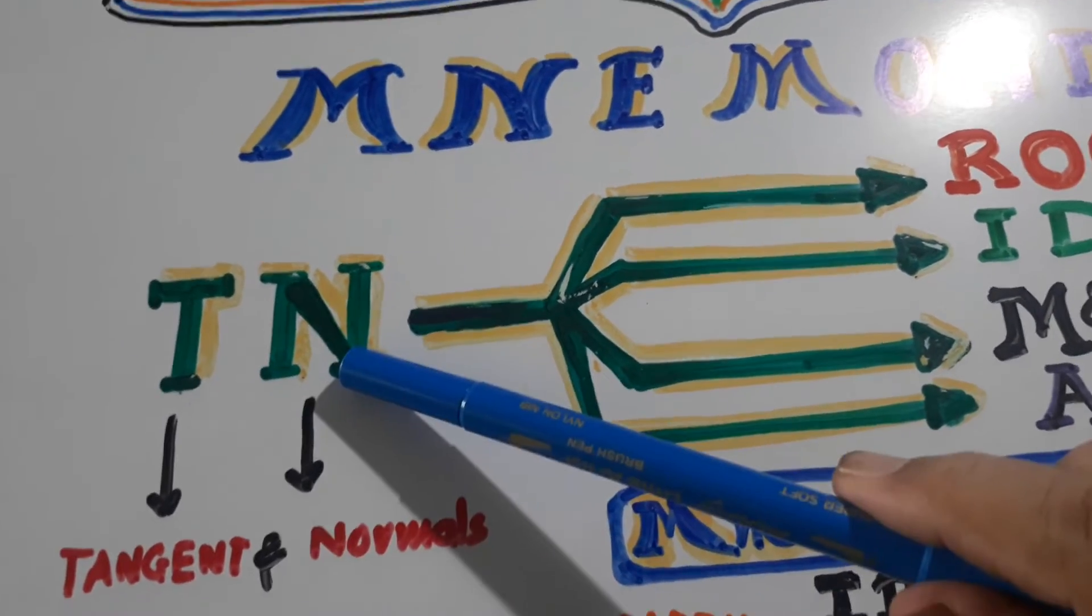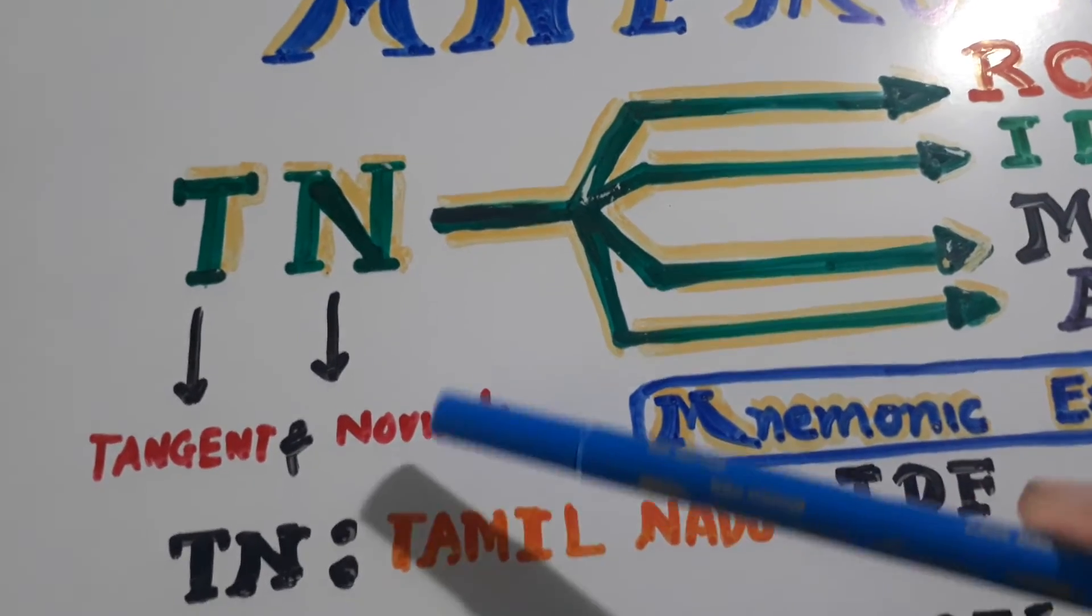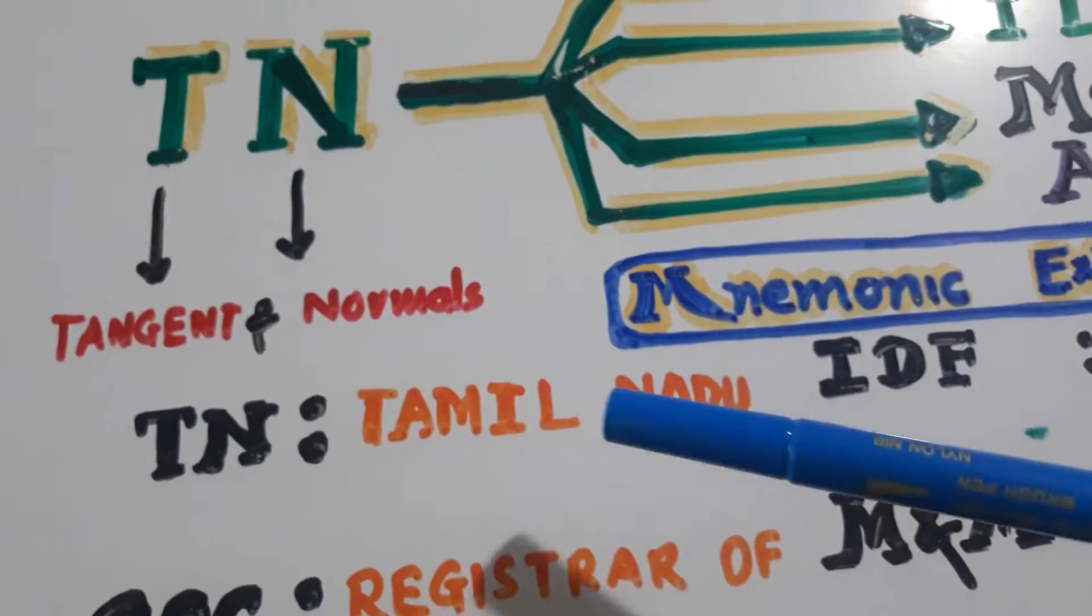T.N. - Tangents and Normals. T.N. also stands for Tamil Nadu.